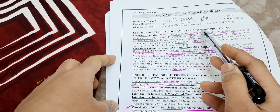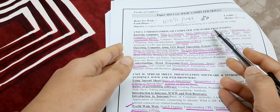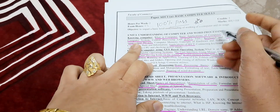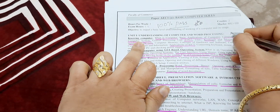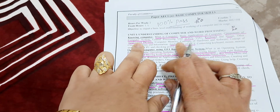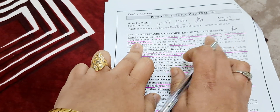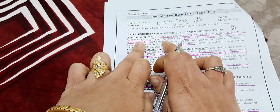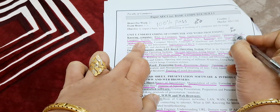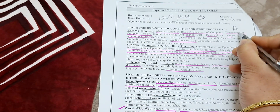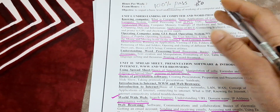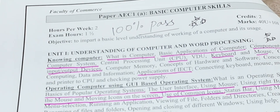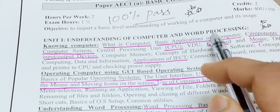In Basic Computer Skills we have two units. The first unit is 'Understanding of Computer and Word Processing.' In this unit, the most important question according to me is: components of computer system. The components are: CPU, keyboard, mouse, and other input devices — these are all components of the computer system. Learn this answer first because it is very important.